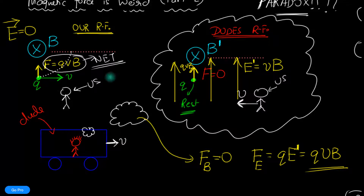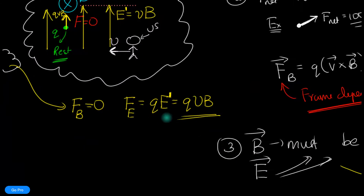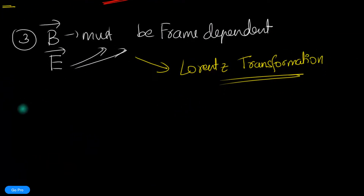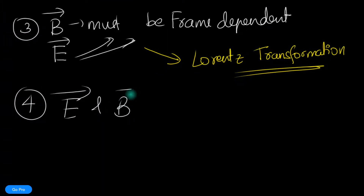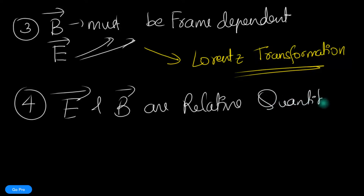This tells us something amazing: in one reference frame the force could be due to the magnetic field, but in another reference frame the same charged particle experiences the same force, but the origin is the electric field. If we can't decide whether the source is electric or magnetic — and the source changes based on reference frame — this tells us something very deep: electric and magnetic fields are relative quantities. Electric fields are not absolute, and magnetic fields are not absolute.